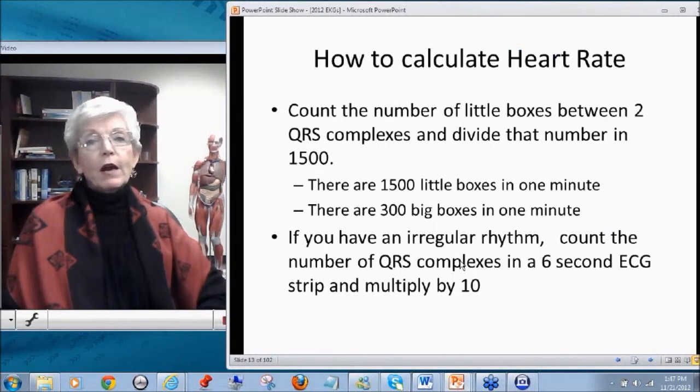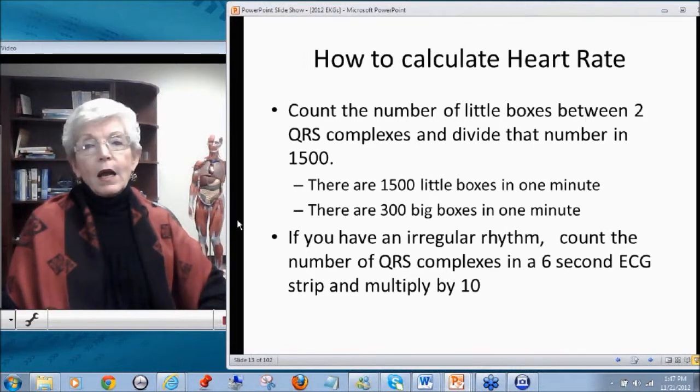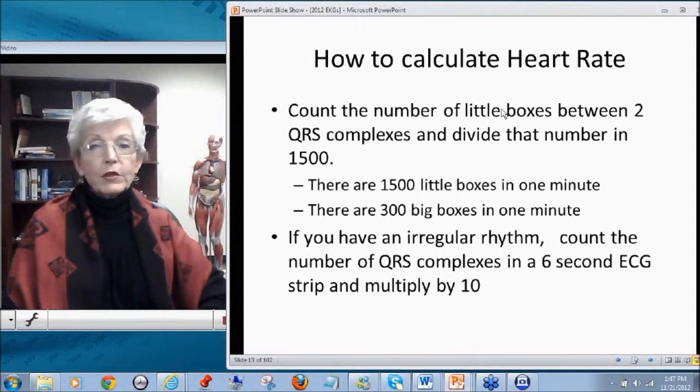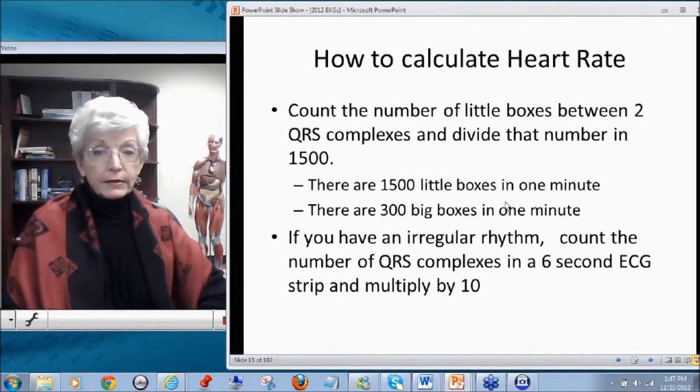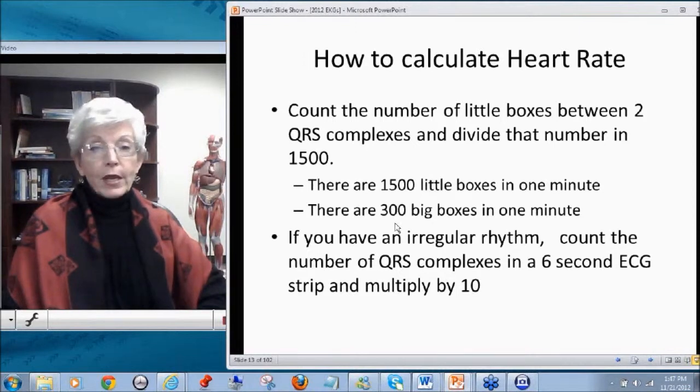So how to calculate your heart rate? What I would like you to do is to take the number of little boxes between two QRS complexes and divide that number into 1,500 because there are 1,500 little boxes in one minute. There are 300 big boxes in one minute.